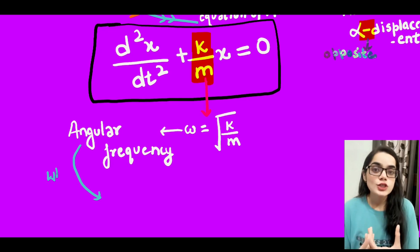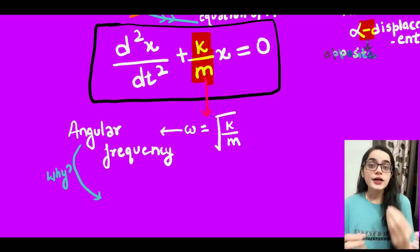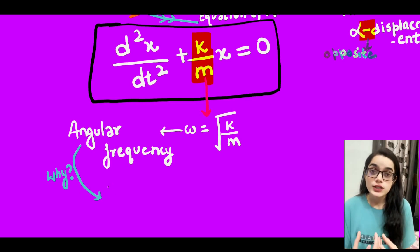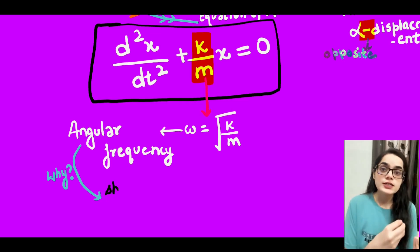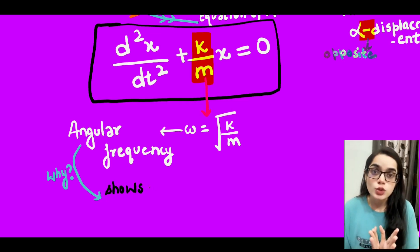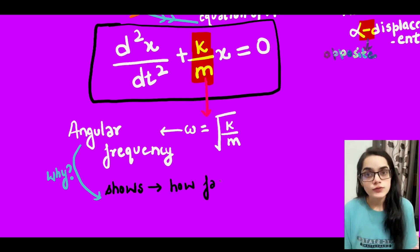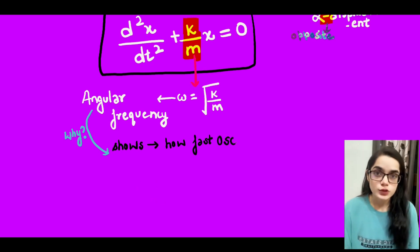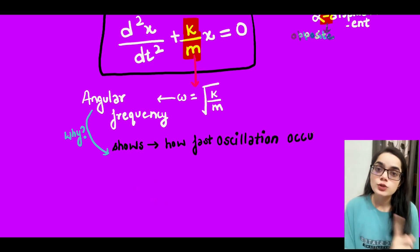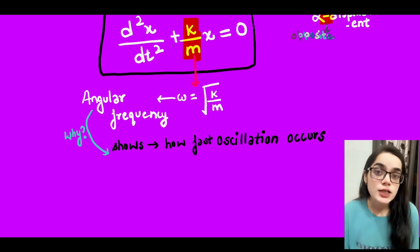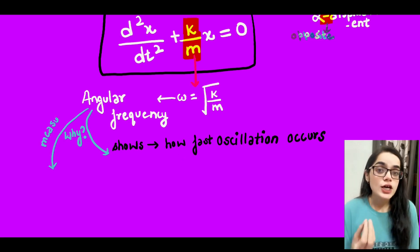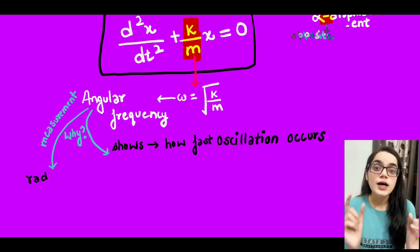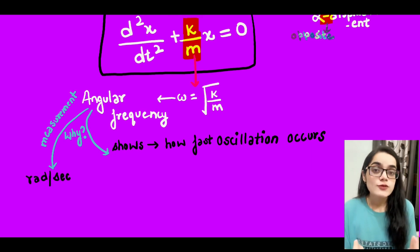What does it mean that acceleration is directly proportional to displacement? It means acceleration increases with displacement, and if acceleration is less, displacement will be less. The negative sign shows the opposite direction of both — if displacement is in one direction, acceleration is in the opposite direction. This negative sign is because of the restoring force.